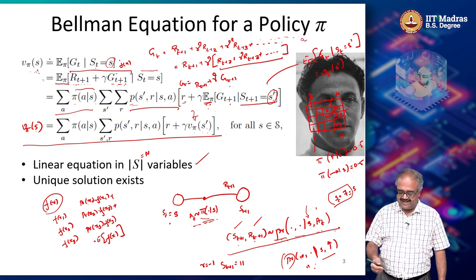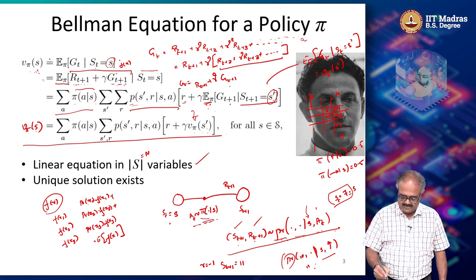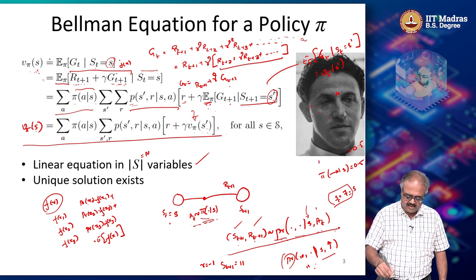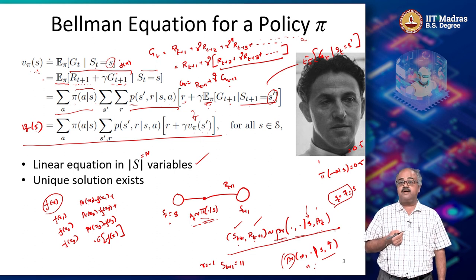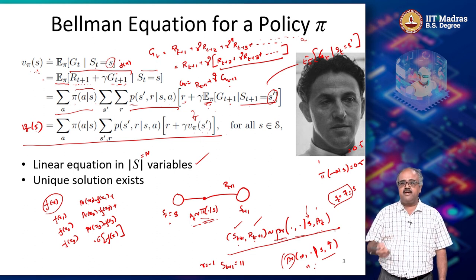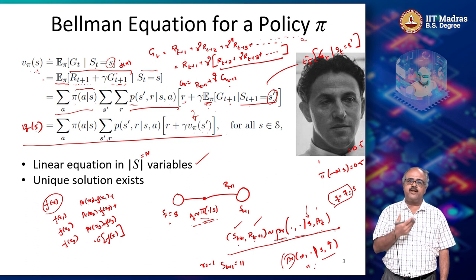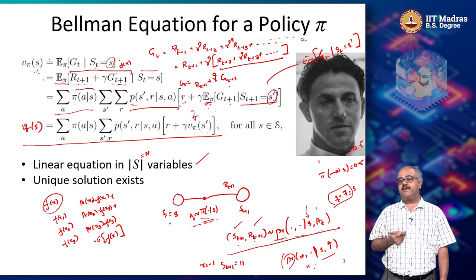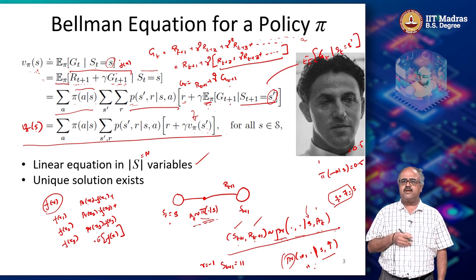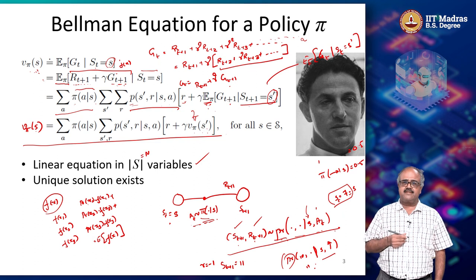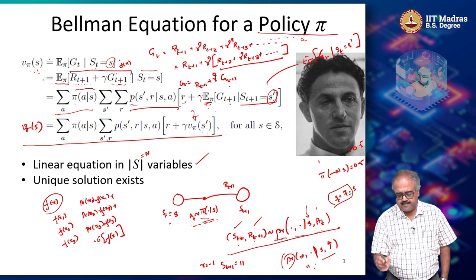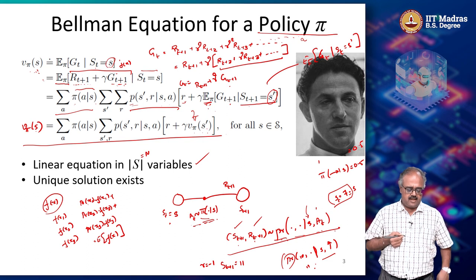This kind of intuition — the recursive way of writing the return — has multiple contributors, but one of the most popular versions is due to Richard P. Bellman. That is why in the RL community we call this the Bellman equations. Other communities have different names for it — some call it the Poisson equation — but we will call these the Bellman equation for a fixed policy pi.